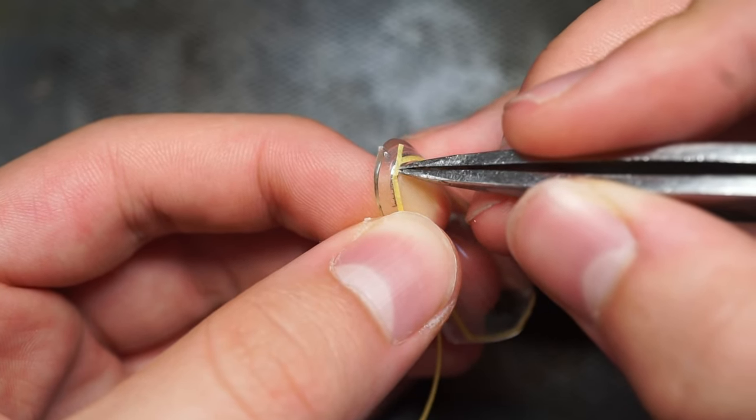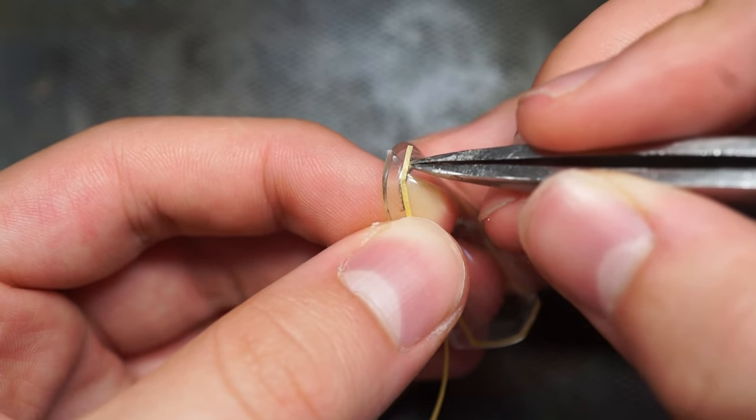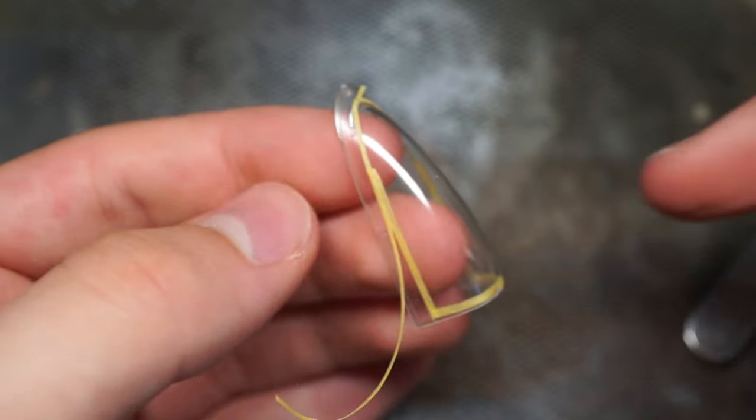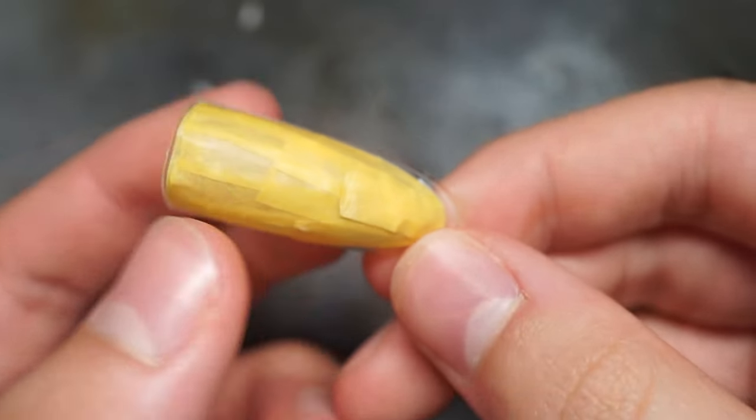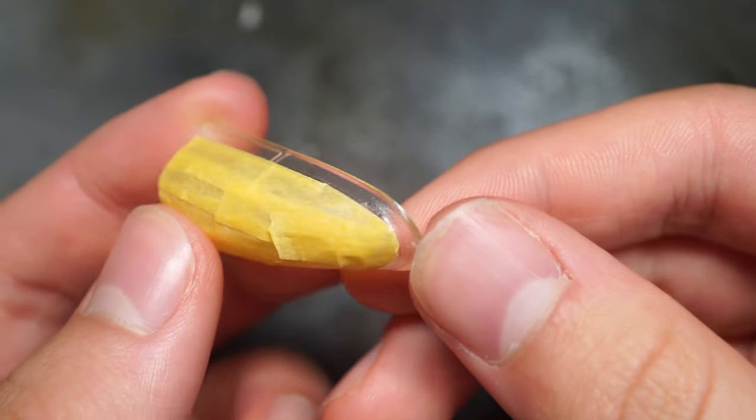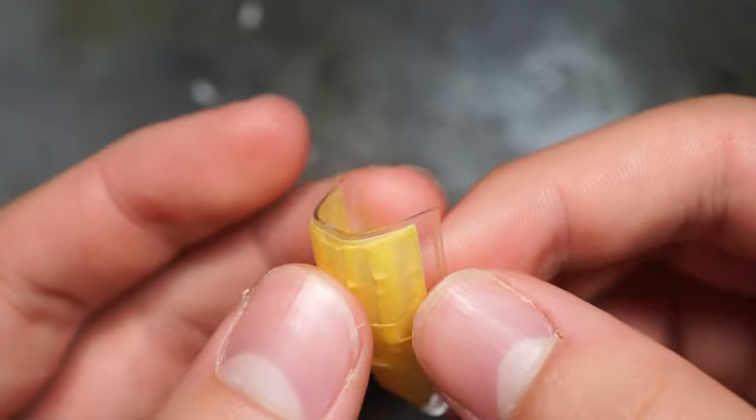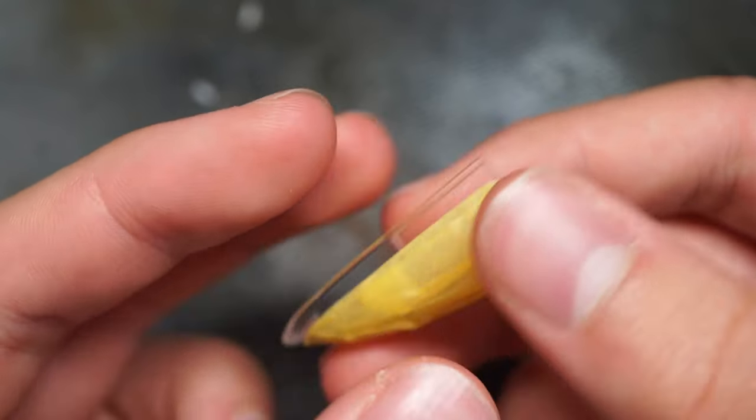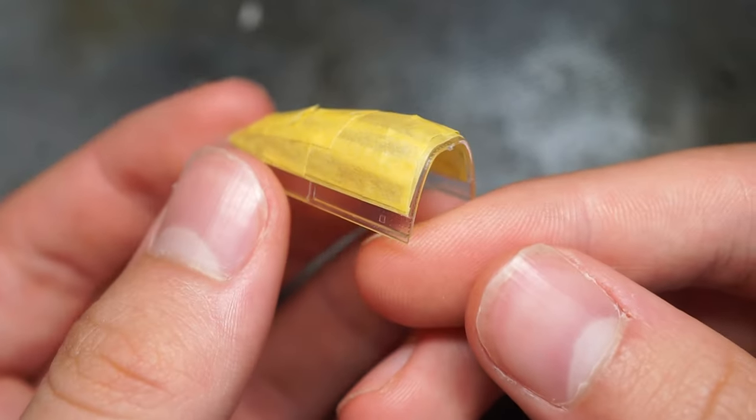Once you've completed the masking job with the thin tape strips, it's time to fill in the middle where the canopy is still exposed. For this, liquid mask is ideal as it's easy to remove and leaves no residue or stickiness on the canopy. However, I don't currently have any so I simply used more 4mm masking tape cut to size to fill in the gaps.